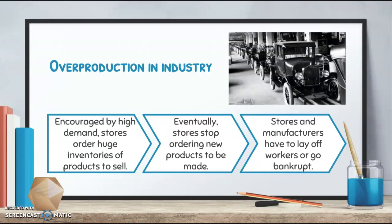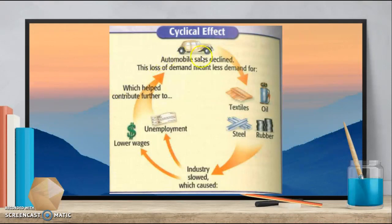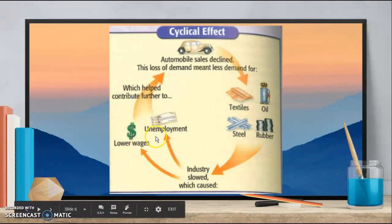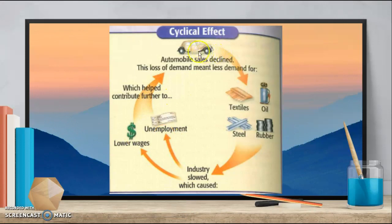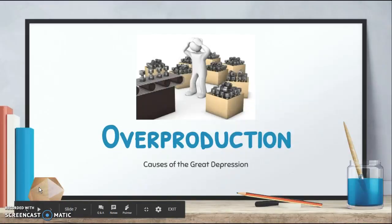And if you're a factory and no more stores want you to make stuff for them, you're going to have to lay off workers or go bankrupt. You can see this is a vicious cycle. For example, if there are fewer cars being sold, then there's less oil for gasoline, less rubber for tires, less steel for frames, less textiles for seats — causing unemployment and lower wages. Those people who are unemployed or being paid less can't buy as many cars, causing car sales to fall further, and the steel, rubber, oil, and textile industries fall further too, with more unemployment. Overproduction — there you have it — the first and perhaps most major cause of the Great Depression.